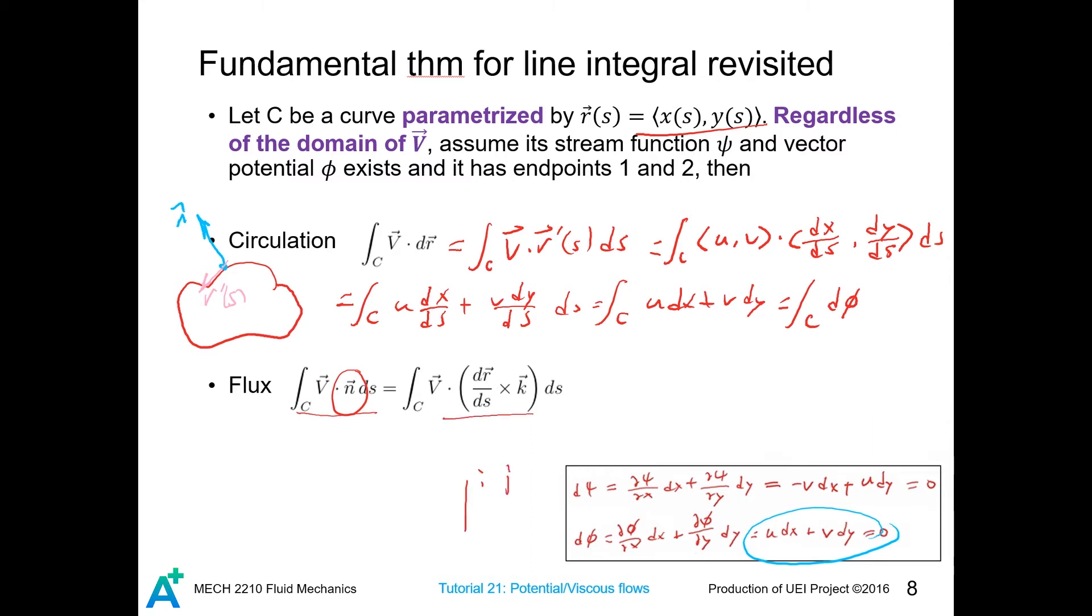Then we can continue. So remember the definition of cross product and that is this. So this term equals this. And from the previous video we have got this expression, so we can substitute it in. So just like potential function measures circulation along a curve, the stream function measures the flux across a curve.